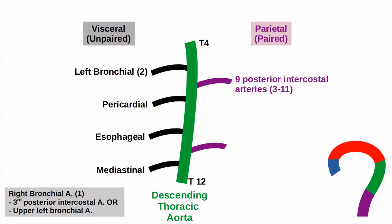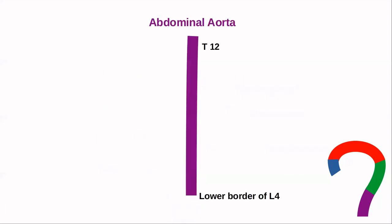For parietal arteries, there are nine posterior intercostal arteries from the third to the eleventh intercostal spaces — the first and second will be covered in upcoming videos. The twelfth rib has no space below it, so that vessel is called the subcostal artery, arising from the descending thoracic aorta on both sides. Another important branch is the superior phrenic artery.